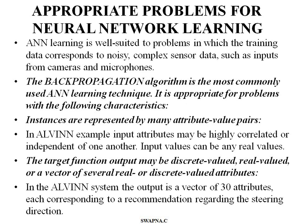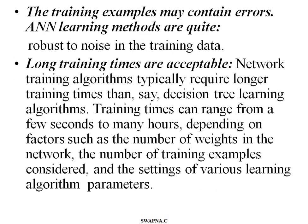Third characteristic: training examples may contain errors. Artificial neural networks are robust enough to handle noisy data in training. Fourth characteristic: longer training times are acceptable. Network training algorithms typically require longer training times than decision tree algorithms, ranging from a few seconds to many hours, depending on the number of weights and number of training examples.